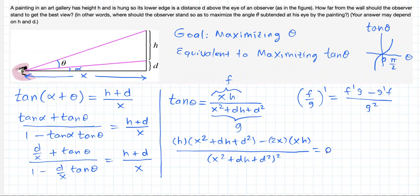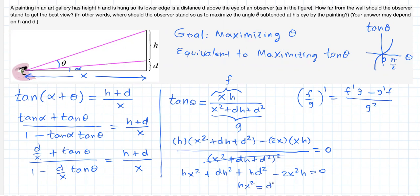The denominator goes to the other side, so we focus on the numerator: h times x squared plus dh squared plus h d squared minus 2x squared h equals 0. Simplifying, h x squared equals dh squared plus h d squared. Dividing both sides by h gives x squared equals dh plus d squared. Factoring and taking the square root: x equals the square root of d times (d plus h).